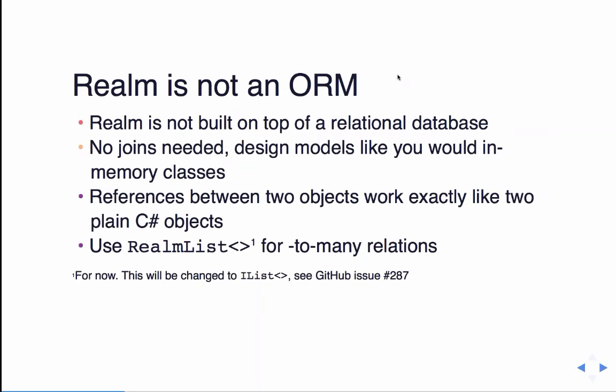Realm is not an ORM and it's not built on top of a relational database like SQLite. It's a completely rewritten-from-scratch library. The thing that separates it most from SQLite is that there's no joining needed. You can design your models like you would with in-memory classes. When you reference between two objects it's like plain C# objects. For one-to-many or many-to-many relationships you use what's called the RealmList, which is an IList class.